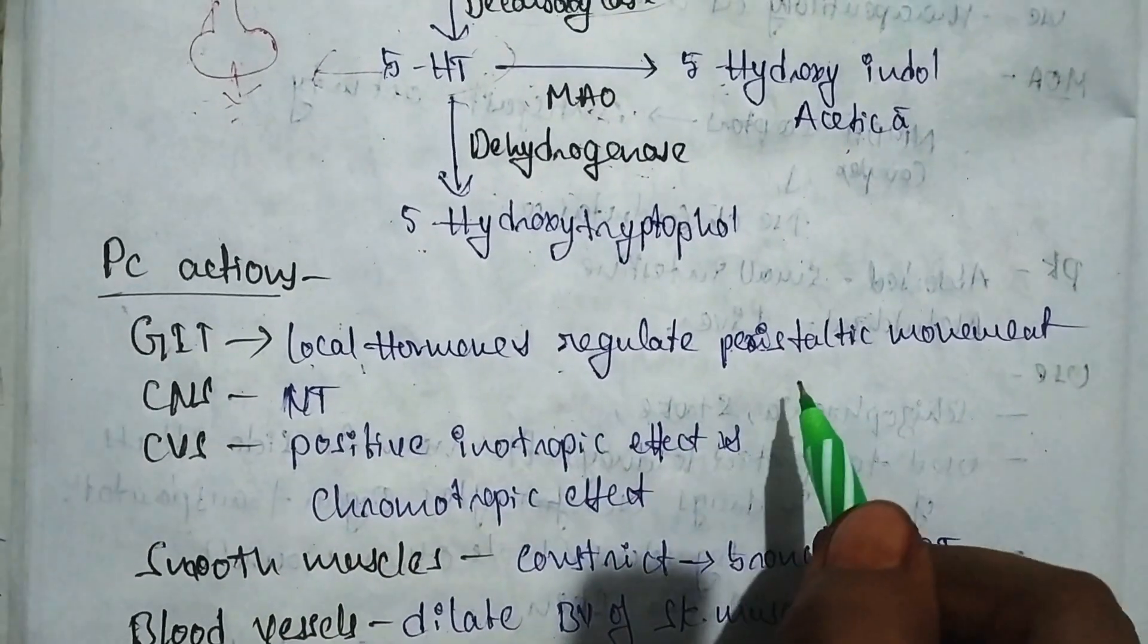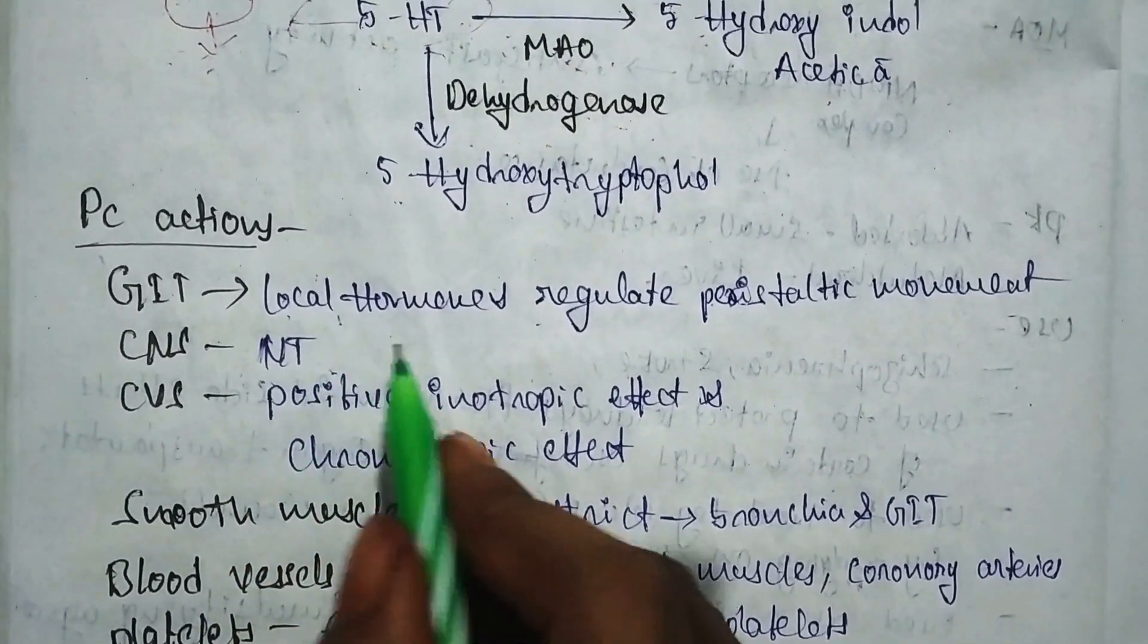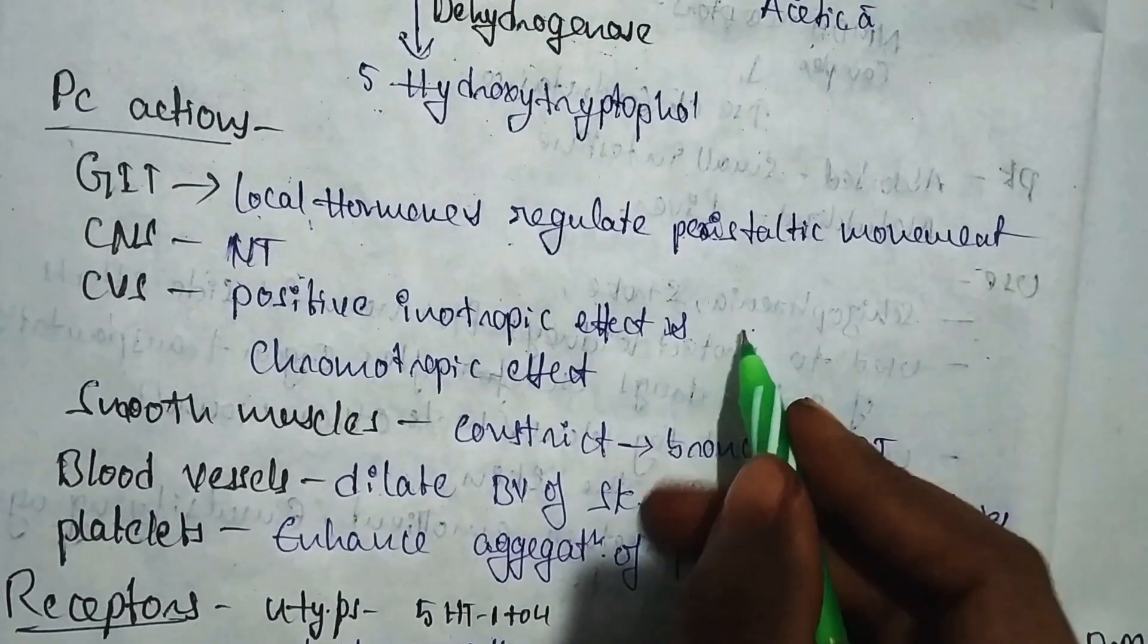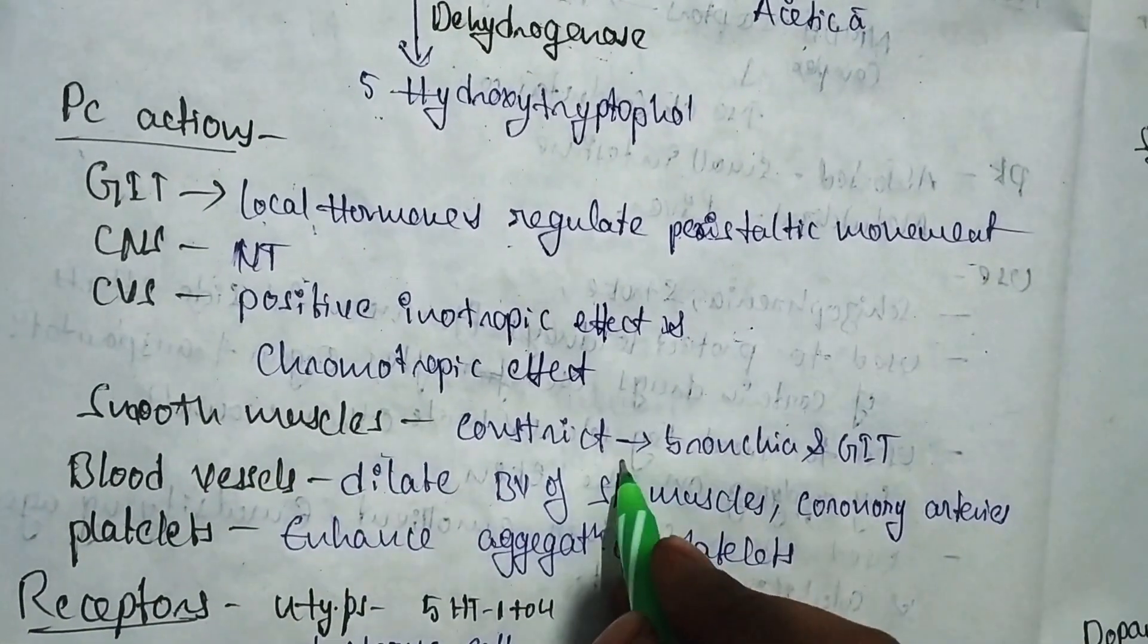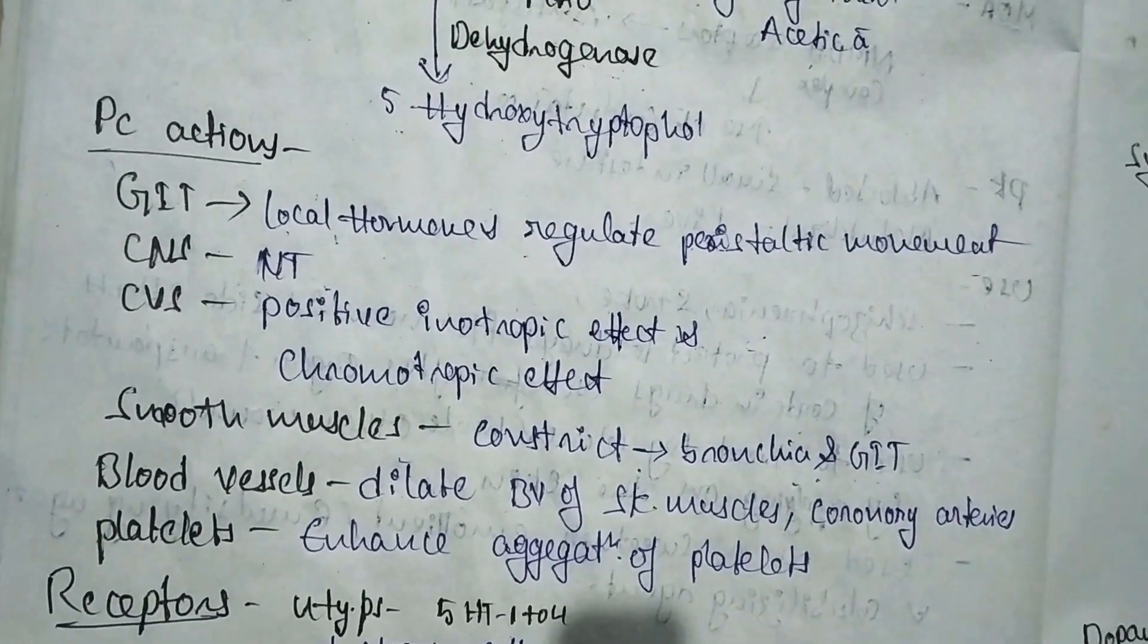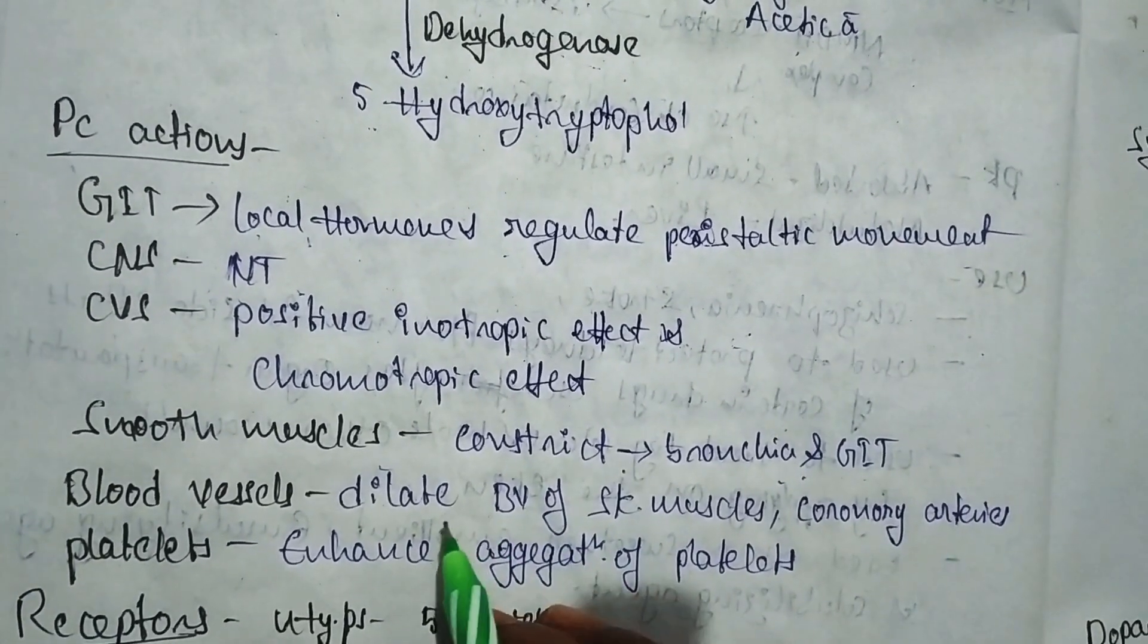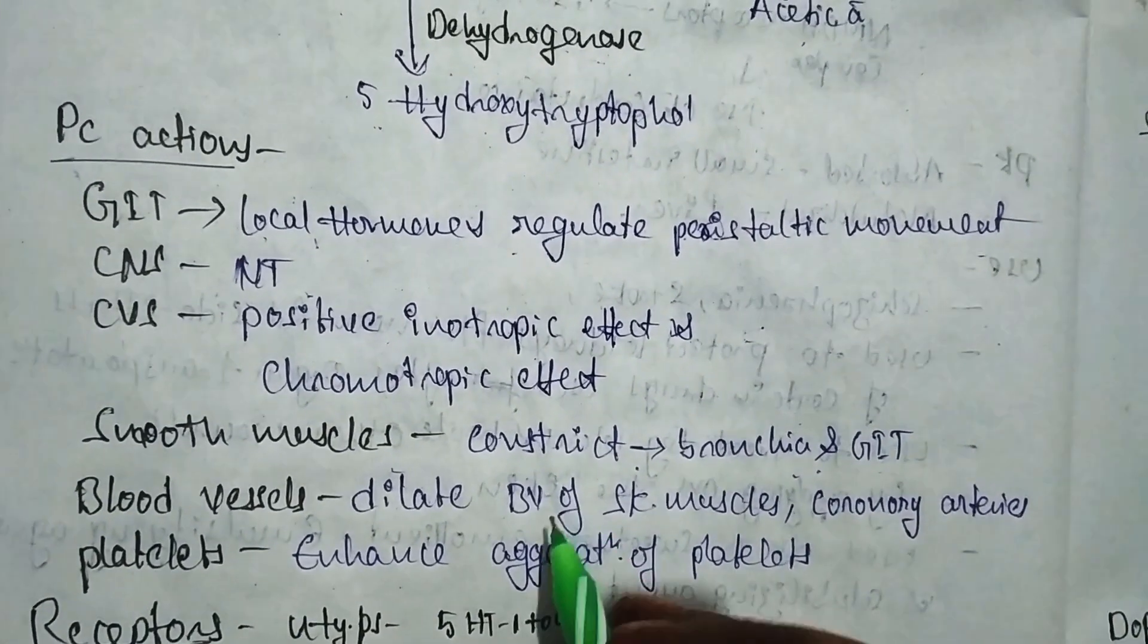On the GIT, it acts as a local hormone and regulates peristaltic movements. On the CNS, it acts as a neurotransmitter, transmitting signals from one neuron to another neuron. On the CVS, it shows positive inotropic and chronotropic effects, regulating heart rate and heartbeat. On smooth muscles, it constricts the bronchi and GIT, and blood vessels dilate in skeletal muscles and coronary arteries. On platelets, it enhances platelet aggregation.